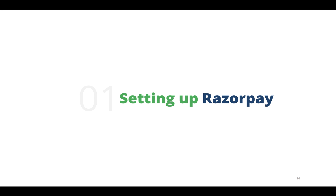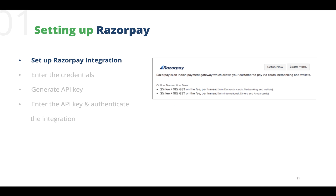Now let us check out our first topic: setting up RazorPay. RazorPay is a secure payment gateway which accepts and validates online payments via credit card, debit card, net banking, wallets, and UPI. Currently, RazorPay is available only for India and supports only Indian currency. Hence, only organizations that have India as their country in Zoho Books will be able to access the RazorPay integration.